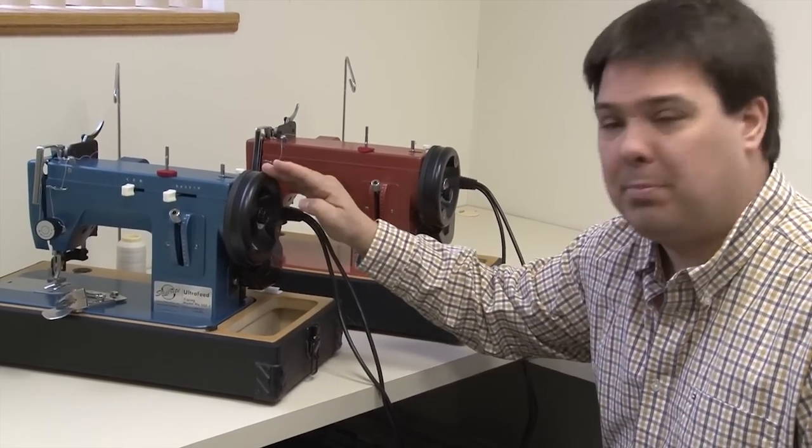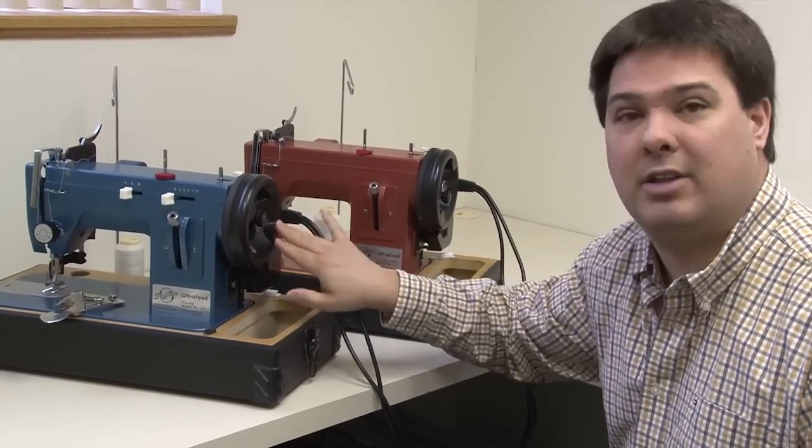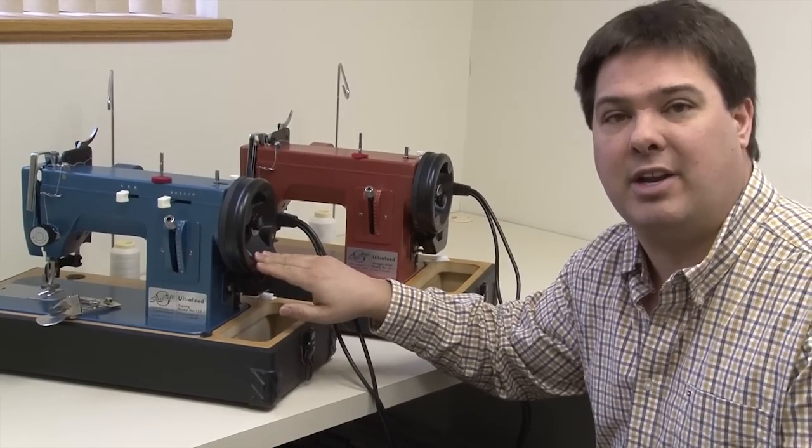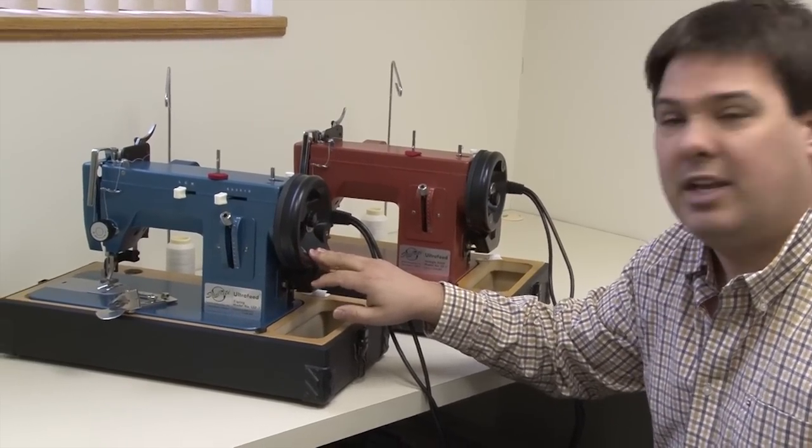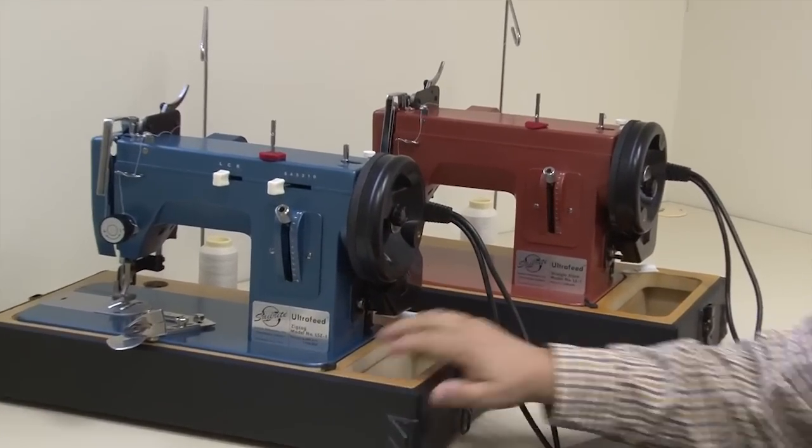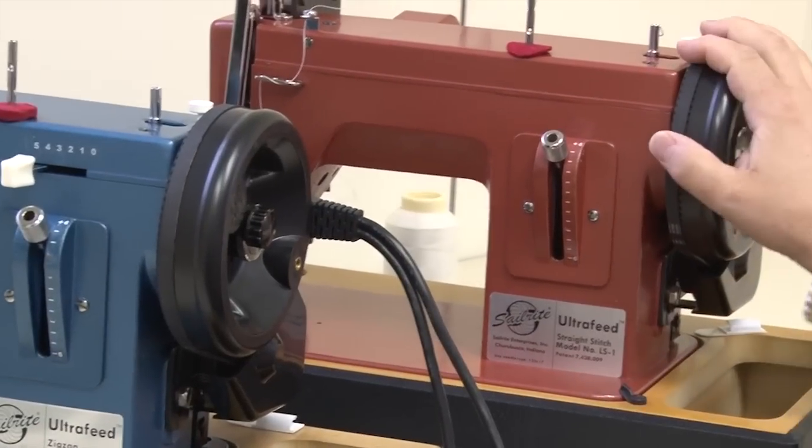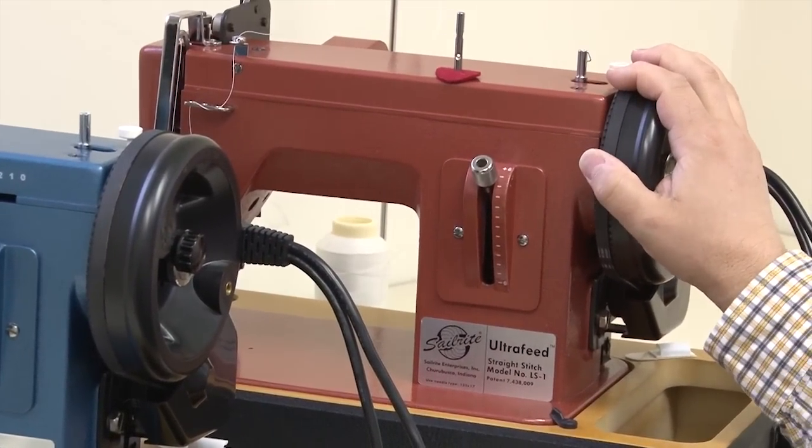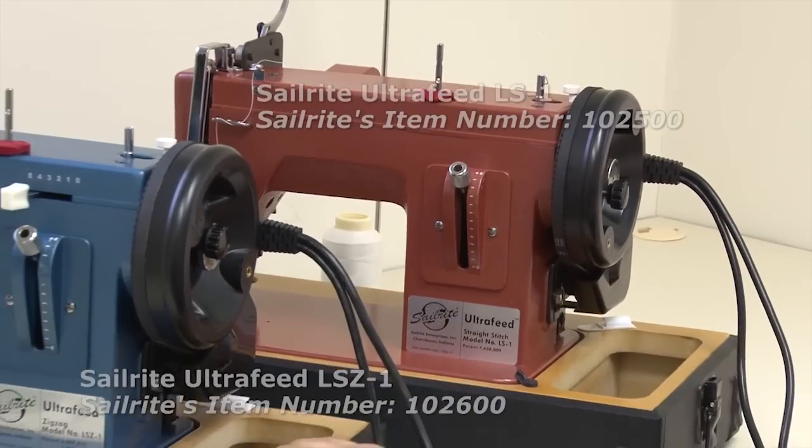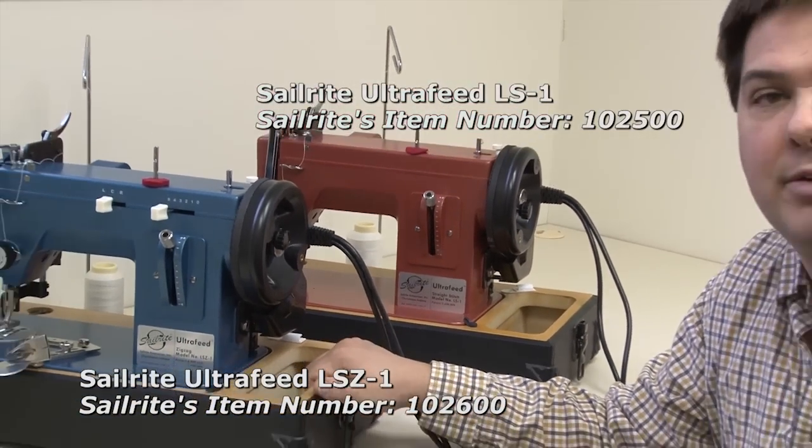Also, the Power Plus flywheel, this black wheel, comes standard on all Sailrite Ultrafeed sewing machines that are sold in the complete packages. The red machine is part number 102500 and the blue machine is Sailrite's part number 102600.